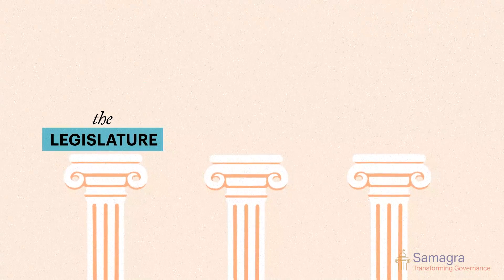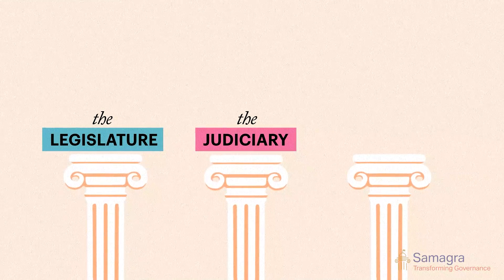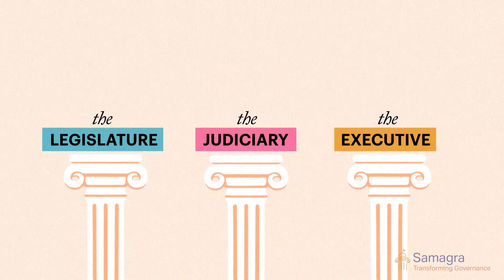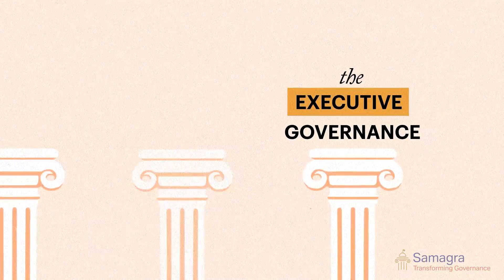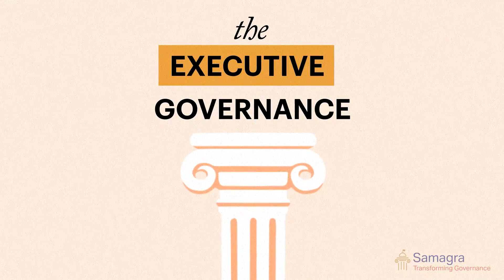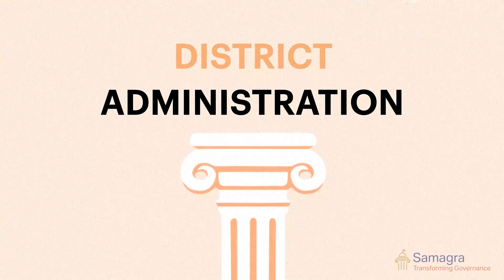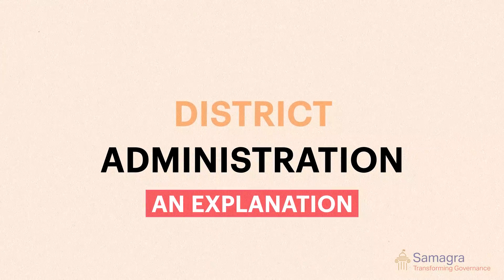The legislature for creating laws, the judiciary to interpret laws, settle disputes and administer justice, and finally the executive which holds responsibility for governance. This arm executes and enforces laws. District administration is part of the executive, and this is what we'll be explaining in this video.